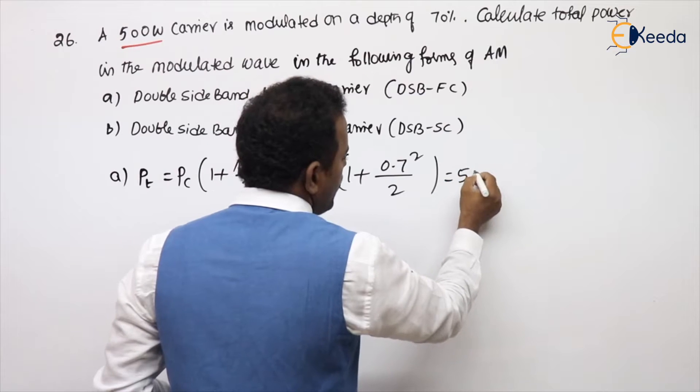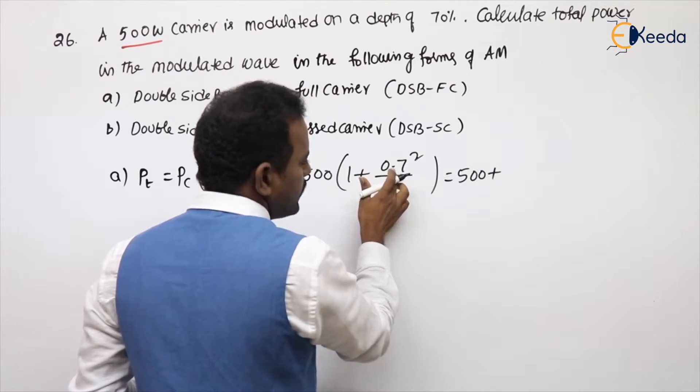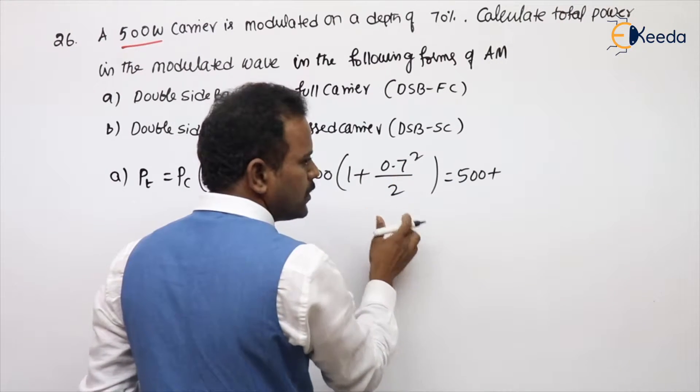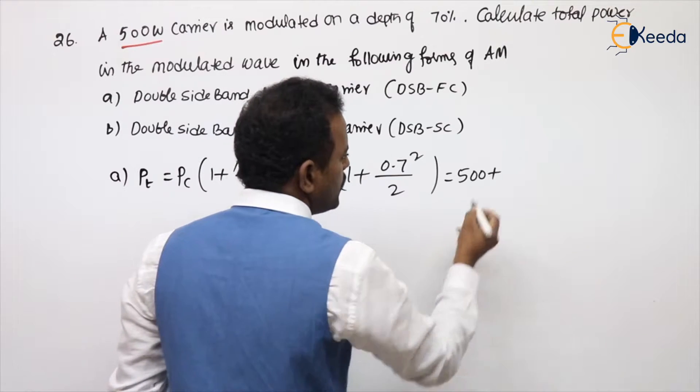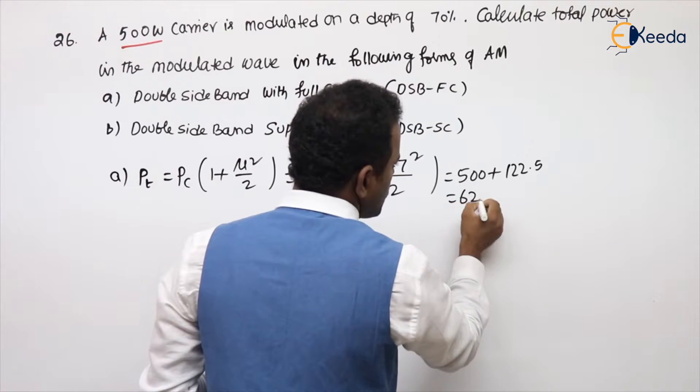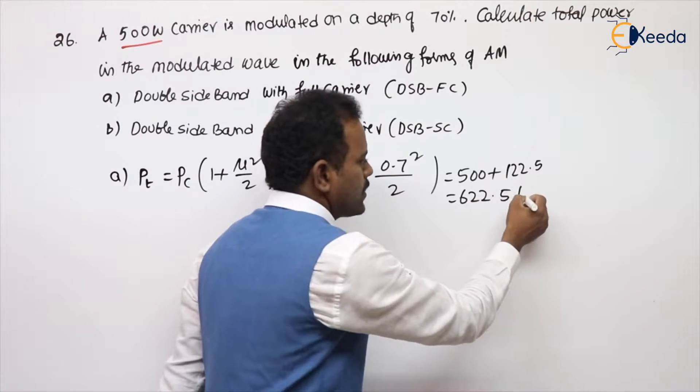Then it will be 500 plus 500 into 0.49, almost 250, little bit decrement, divided by 2. So approximately 122.5, so 622.5 you will get. Power, watts.